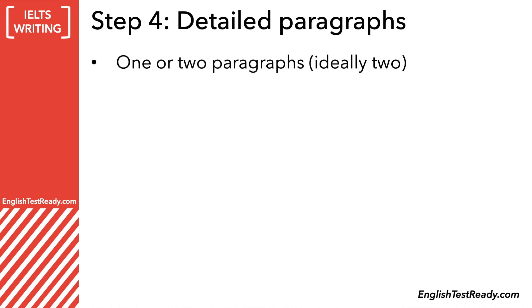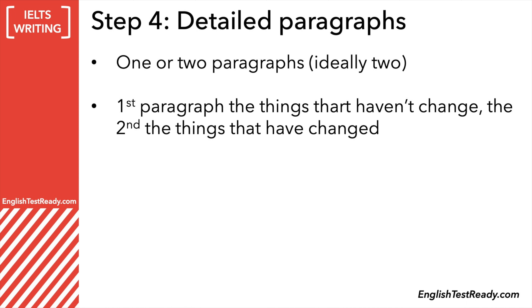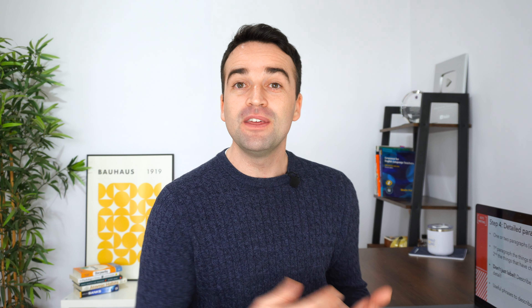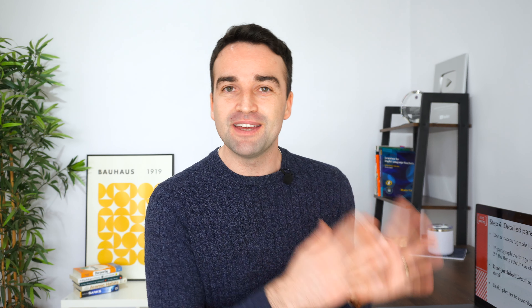So the introduction and overview have been written. Now we're going to look at the details, which are of course the most important paragraphs. To get over 150 words, you're probably going to need to write two paragraphs, going into detail and explaining carefully all of the main features. For this example, in the first paragraph I'm going to write about things that haven't changed, and then in the second paragraph I'm going to write about all of the things that have changed. Alternatively, you could talk about the major changes in paragraph one and the less important ones in paragraph two.